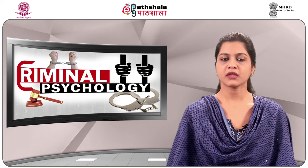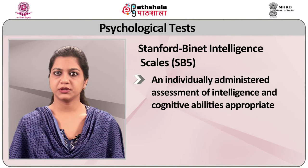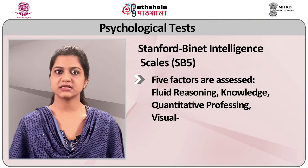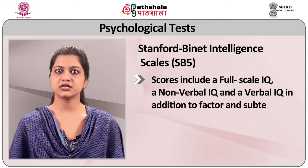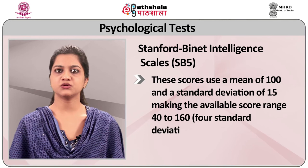SB-5 (Stanford-Binet Intelligence Scales, 5th Edition) is an individually administered assessment of intelligence and cognitive abilities appropriate for examinees aged 2 to 85+ years. Five factors are assessed: Fluid Reasoning, Knowledge, Quantitative Processing, Visual-Spatial Processing, and Working Memory. Scores include a Full Scale IQ, a Nonverbal IQ, and a Verbal IQ, in addition to factor and subtest scores. These scores use a mean of 100 and a standard deviation of 15, making the available score range 40 to 160.